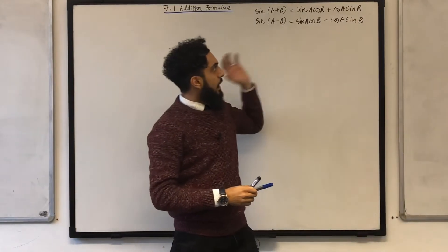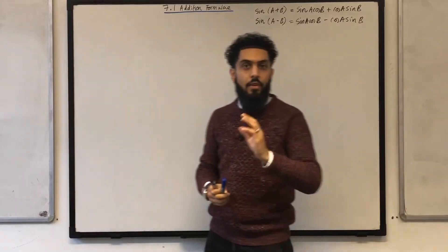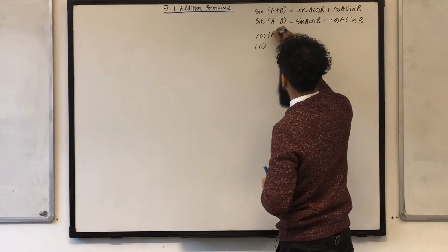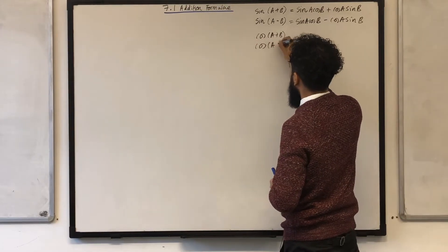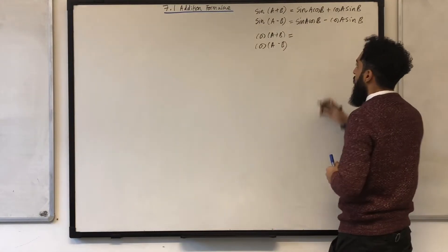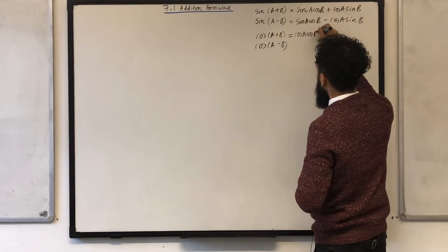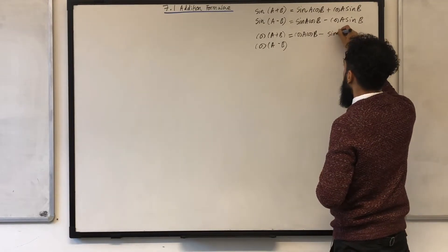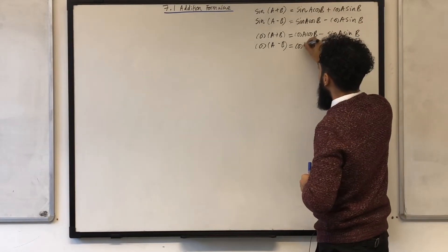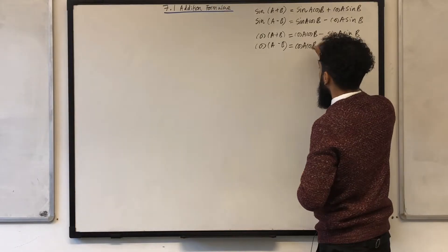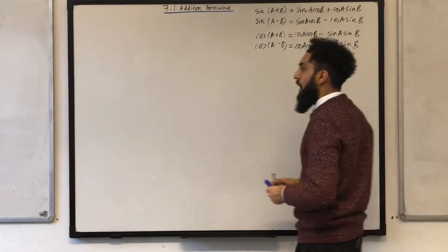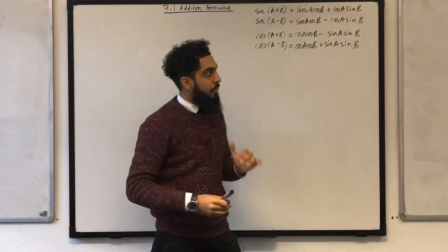So you've got the addition formulae for sine. Let's have a look at the addition formulae for cos. You could have A plus B in the bracket or A minus B in the bracket. cos(A plus B) is equivalent to cos A cos B minus sin A sin B. The second one is equivalent to cos A cos B plus sin A sin B. There you have it — the addition formulae for cos.